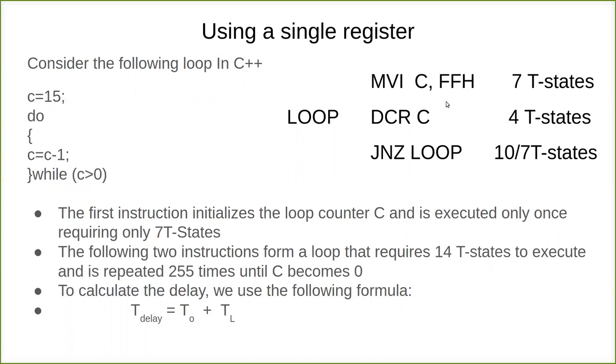It occupies two machine cycles: first machine cycle takes 4 T-states, second machine cycle takes 3 T-states, put together 7 T-states. Then we have to decrement. In the next step we decrement to simulate it, then jump on no zero, JNZ.